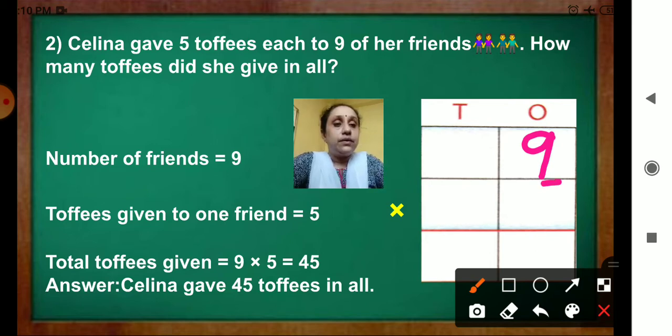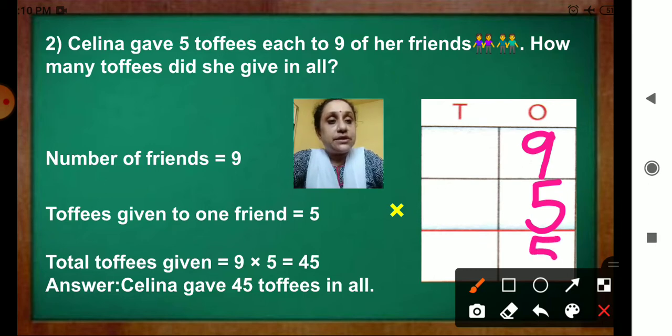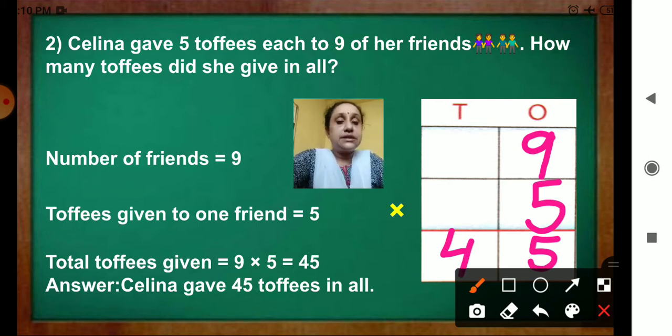Toffees given to one friend equal to 5. Now we will write 5 here. Total toffees given equal to what you have to do? 9 multiplied by 5. You know 9 fives are 45. But write properly from ones place 5 and 4. So you will get the correct answer. Selena gave 45 toffees in all.